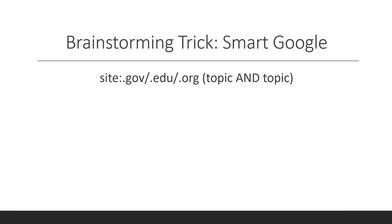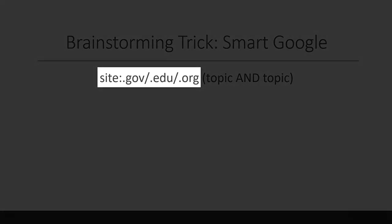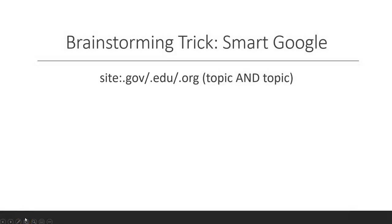One way to search Google smart is to limit your site domain to .gov or .edu. This will limit the type of resources you get by limiting to government websites or educational websites, for example. Then you type in your topic of interest in parentheses. I will show you an example here next.